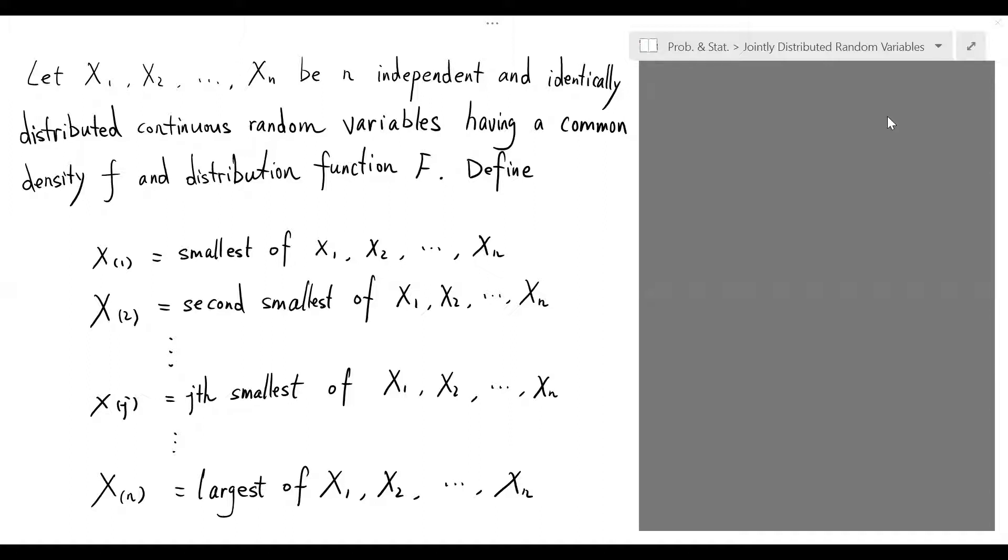Suppose capital X1, capital X2, to capital Xn are n independent and identically distributed continuous random variables, having a common density f and distribution function capital F.